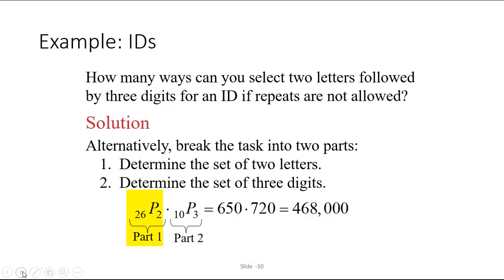Now since repetition is not allowed and order matters, we can use a permutation for each part. To choose the two letters would mean that from the alphabet of 26 letters, we're picking two and arranging them. So part one would be 26P2. For the three digits, out of the 10 digits 0 through 9 in our number system, we would be picking three of those and arranging them. So part two would be 10P3. Calculating 26P2 and 10P3, we would get 650 times 720, which also is a total of 468,000. You can use the formulas that we just discussed a minute ago to find these, but I'm going to show you how to do this on your calculator.